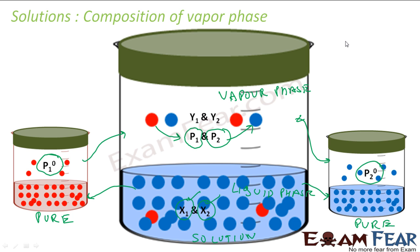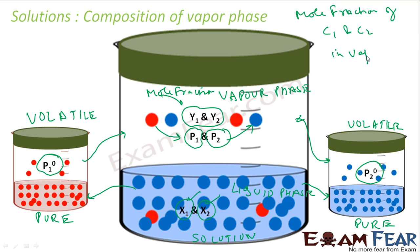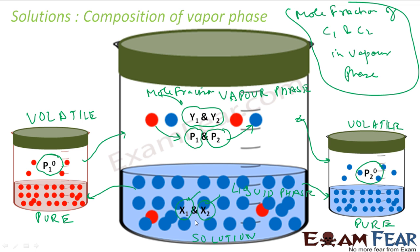But in the vapor phase, if both component 1 and component 2 are volatile — because this is Raoult's Law for volatile components — they will both have some concentration. So I want to find the composition of these two in the vapor phase: the mole fraction of component 1 and component 2 in the vapor phase.